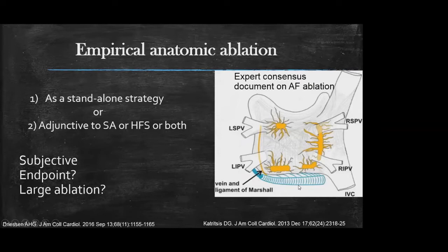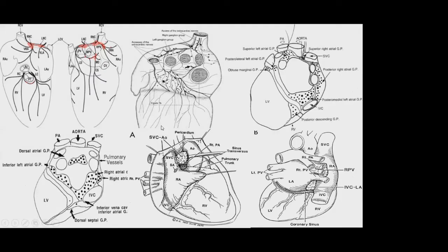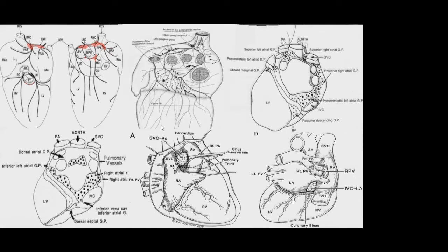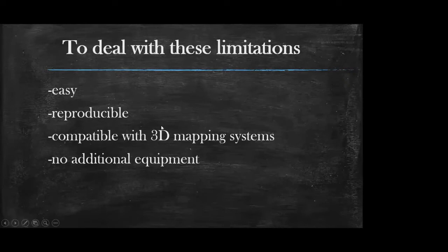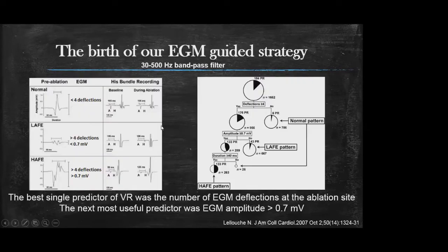The last method is empirical anatomic ablation. According to the latest expert consensus on AFib ablation, the great majority of ganglionated plexus are located around pulmonary vein ostia. However, anatomical data from mammals to humans shows GPs are not predominantly around pulmonary vein ostia, so pulmonary vein isolation or circumferential ablation alone is insufficient to achieve vagal denervation. We need an easy, reproducible method compatible with 3D mapping systems without additional equipment — this was the basis for our electrogram-guided strategy.